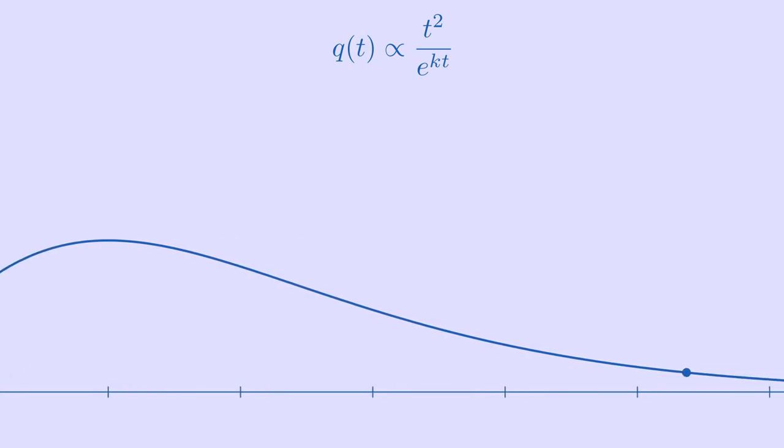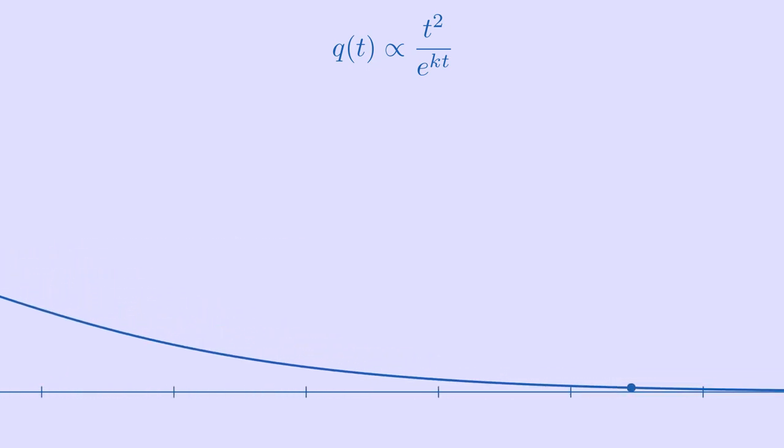In the limit, the polynomial term is so much smaller than the exponential term that the dynamic pressure goes to zero, and we reach the near vacuum of space.